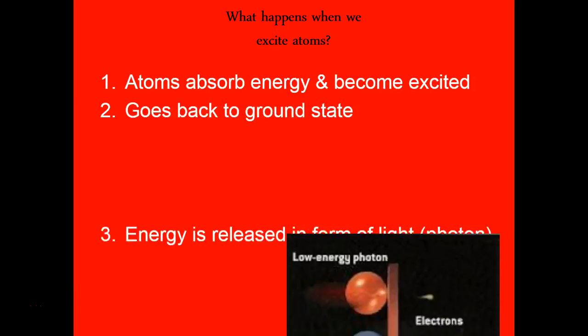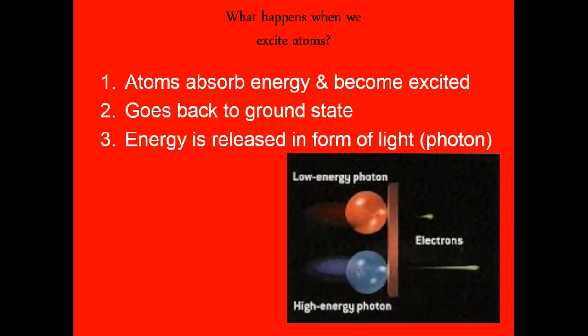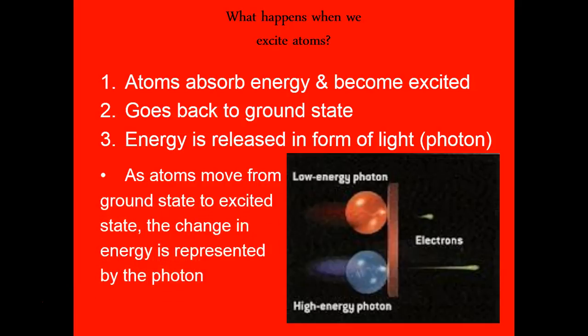To summarize that process: atoms absorb energy through heat, light, or electricity. The electron becomes excited. Then the electron falls back down to its ground state, and as it does, it shoots out a photon of light.